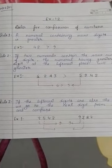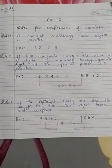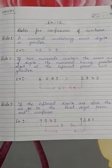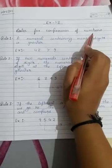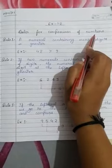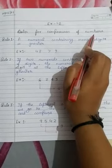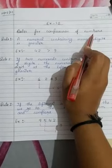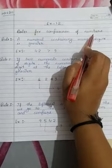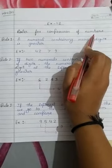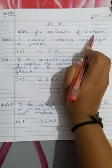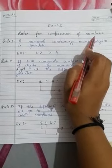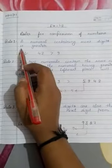Good morning, my dear students. This is your maths class and today I am going to explain rules for comparison of numbers — how you will compare two numbers or more than two numbers. We know that we always compare two or more numerals. We can't compare one numeral. So listen carefully, I am going to explain it.